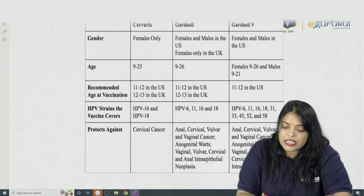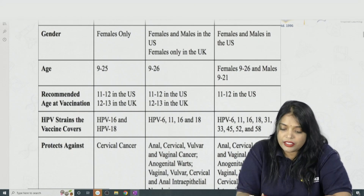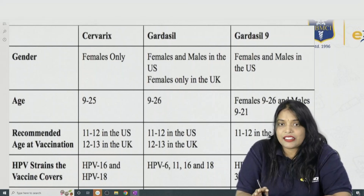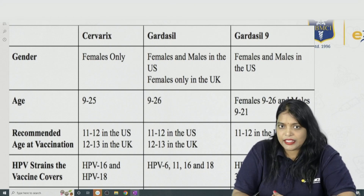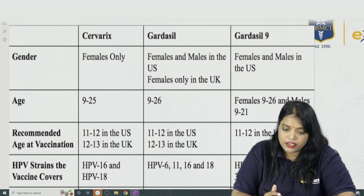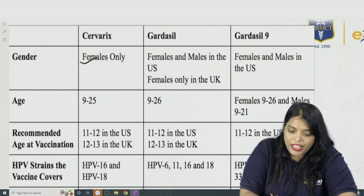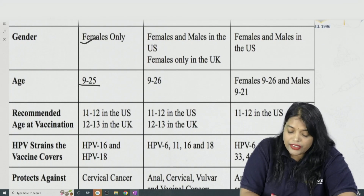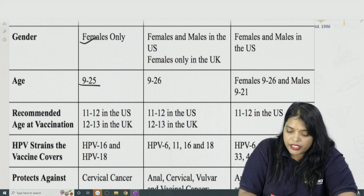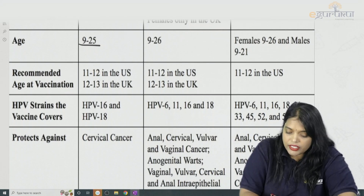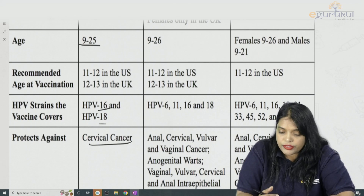There are three vaccines available: Cervarix, Gardasil, and Gardasil 9. Cervarix is now outdated. It is for females only, ages 9 to 25 years, with recommended vaccination age of 11–12 years in the US and 12–13 in the UK. It covers HPV strains 16 and 18, protecting against cervical cancer and premalignant lesions of the cervix.